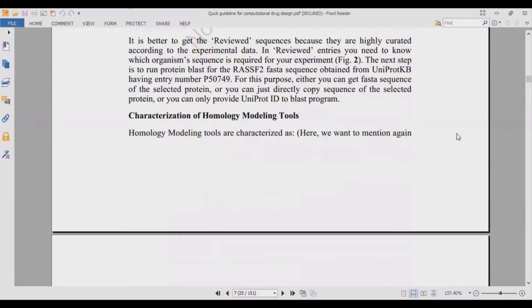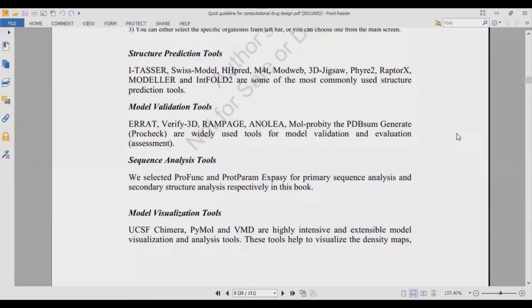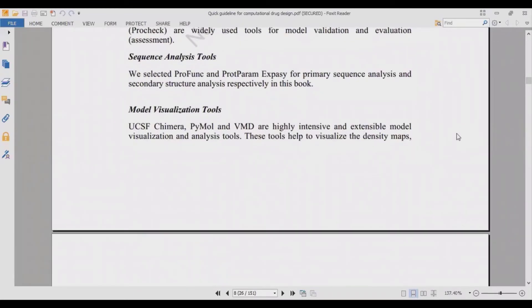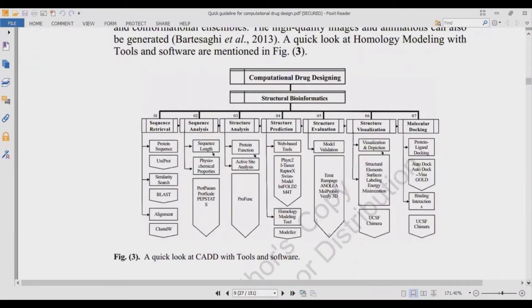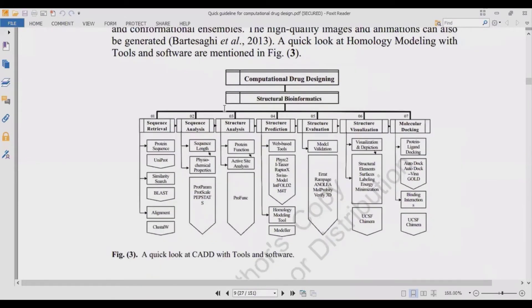We have different structure prediction tools, model validation tools, sequence analysis tools, and model visualization tools. Computational drug designing is the title of this book. There are many approaches and domains of bioinformatics: structural bioinformatics, functional bioinformatics, evolutionary bioinformatics, and many more.